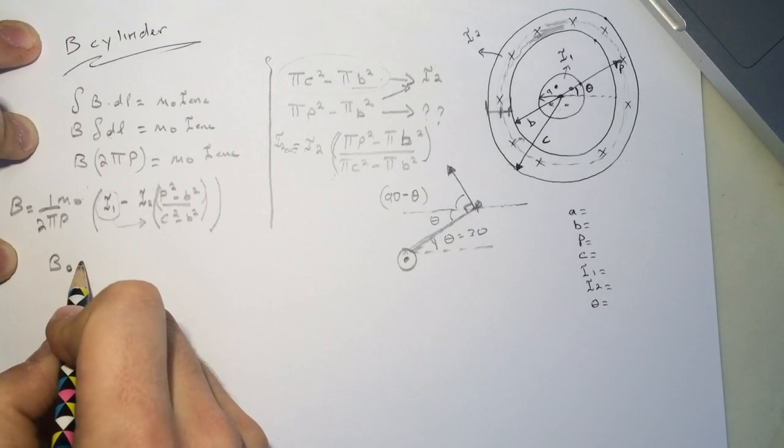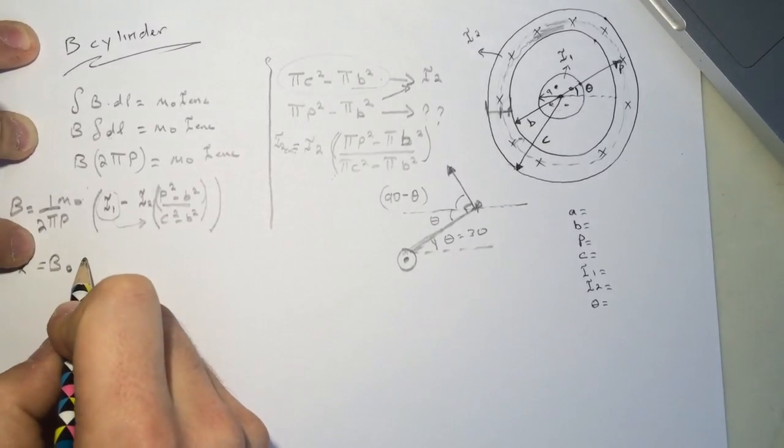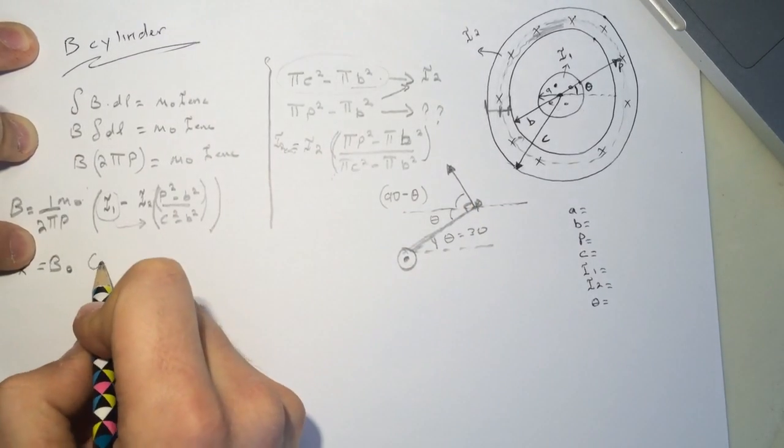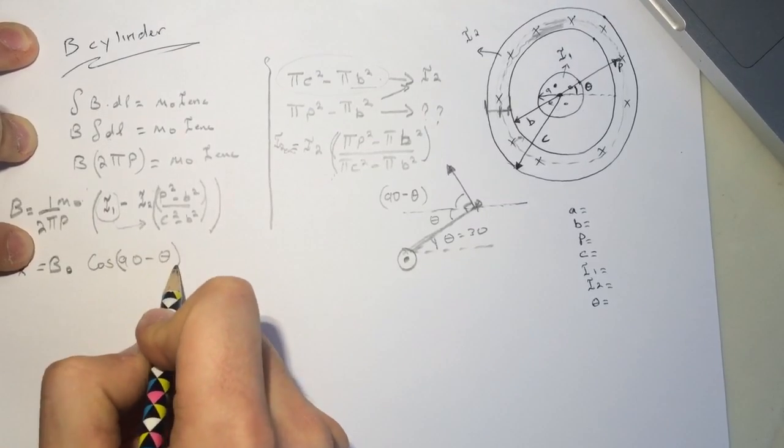So b0, or let's say it here, bx, will be b0 times the cosine of 90 minus theta.